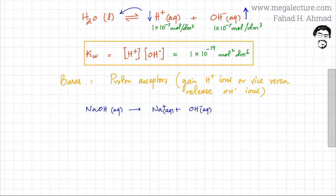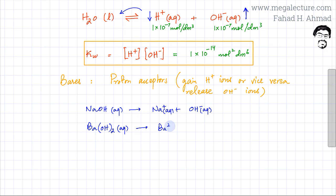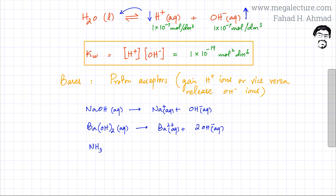For example, barium hydroxide is also a strong alkali. Remember, alkalis are bases that are soluble in water and usually produce OH⁻ ions. Barium hydroxide produces Ba²⁺ and 2 OH⁻ ions in aqueous state. A weak base example is NH₃. Almost all nitrogen-containing bases are weak. Nitrogen has lone pairs that attract H⁺ ions, so NH₃ mixed in water attracts H⁺ and forms NH₄⁺.